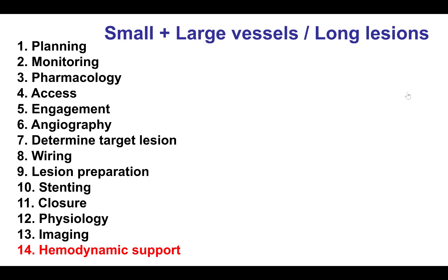Hemodynamic support is done as per standard practice. To summarize, small and large vessels and long lesions can be challenging to treat, and small vessels and long lesions have a higher risk of restenosis. Giving nitro is critical for performing angiography, and intravascular imaging can help better determine the size of both small and large vessels. Lesion preparation should be done with caution in small vessels due to the risk of dissections, and balloon angioplasty alone or drug-coated balloons may be the primary treatment strategy. Stenting should be optimized in all subgroups to reduce restenosis, and both physiology and imaging are useful for determining the need for PCI and optimizing the final angiographic result.